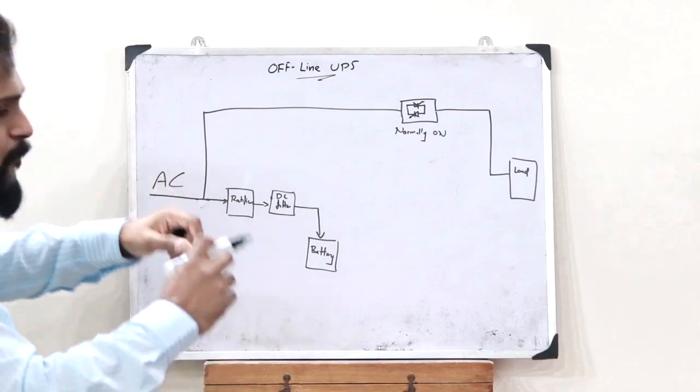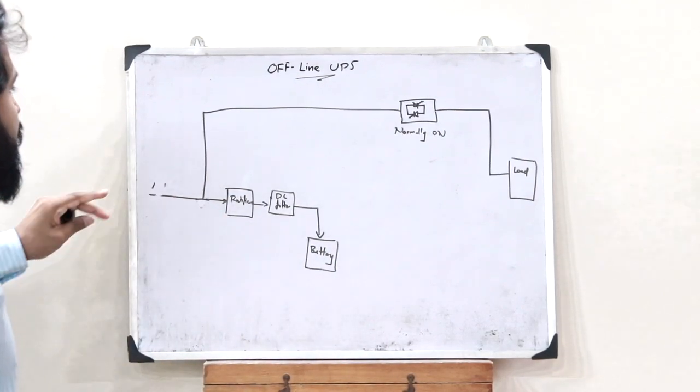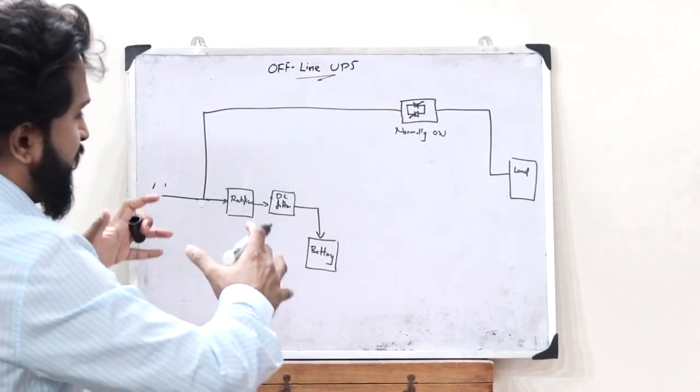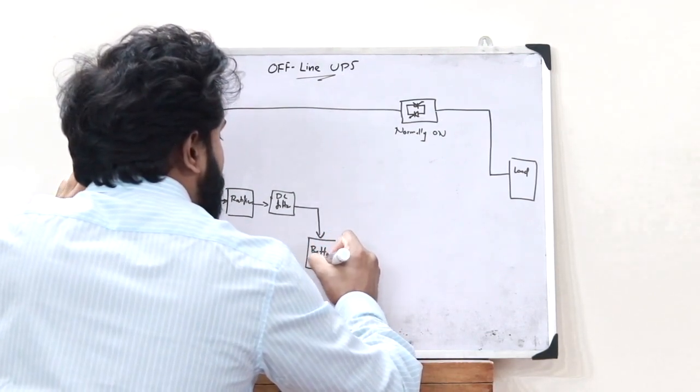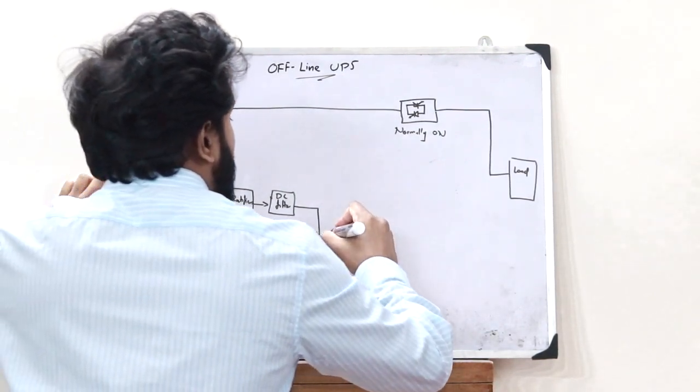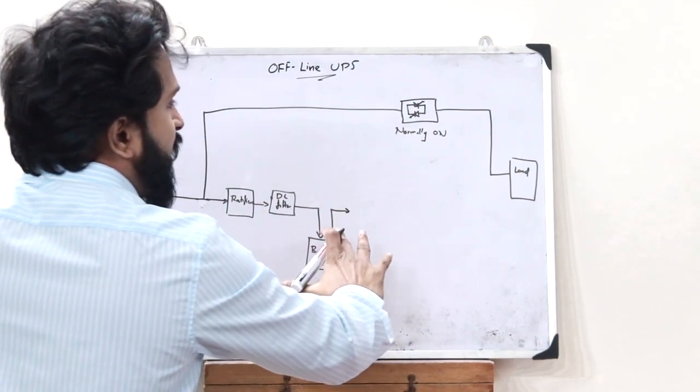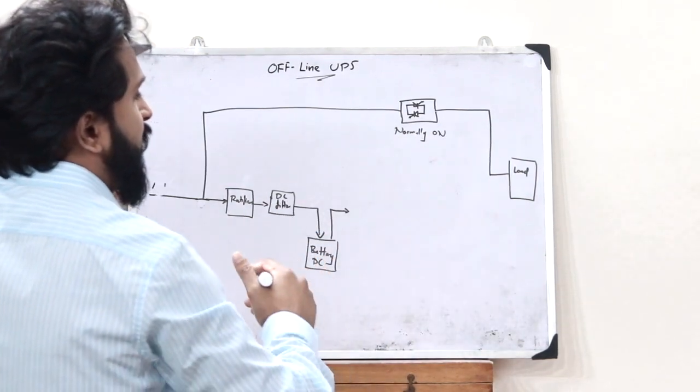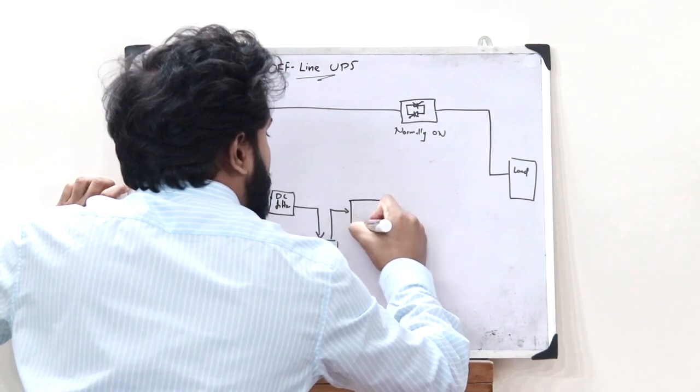Now let us assume that the power supply is cut off. Then the current cannot flow through here, and in such a case, this DC current stored inside the battery starts discharging. When it discharges, this DC current cannot be directly connected to the load—it has to be converted to AC current, and for that a particular inverter is connected.